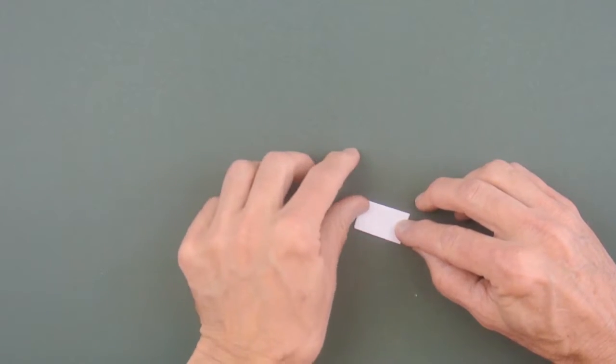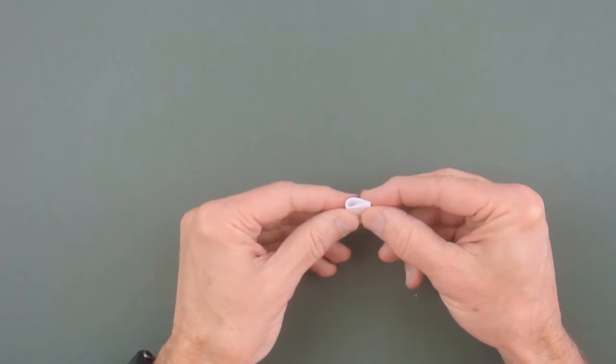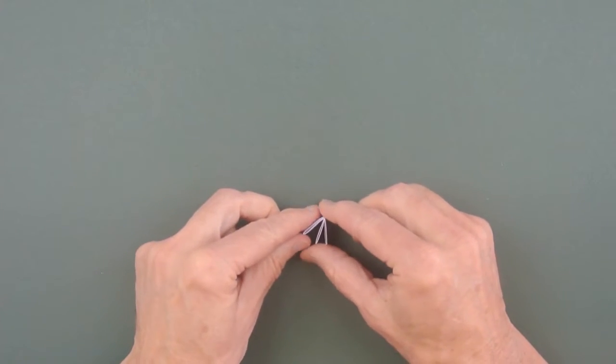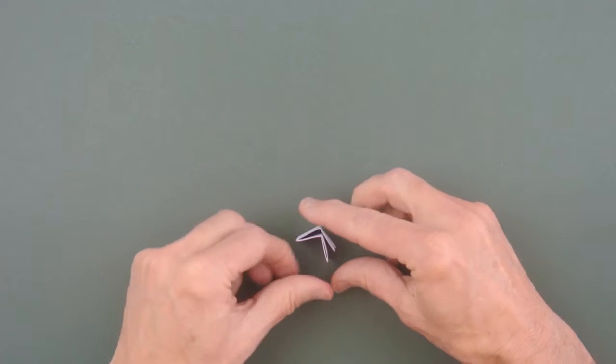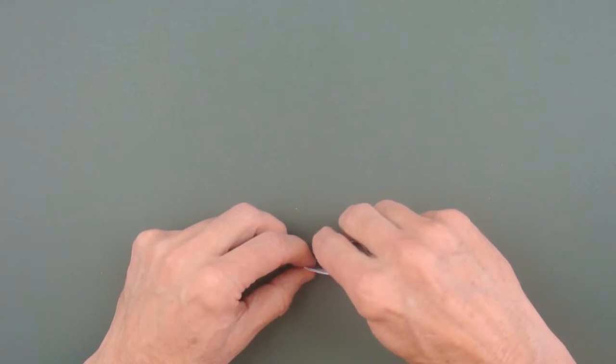We're going to fold a third time. And then a fourth time, since 2 to the 4th is 16, we'll now have 16 segments. We're going to unfold that, trying to get 90-degree angles. So there's our first iteration and go a little further, there's the second iteration of the dragon curve.